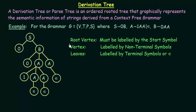Now let us see how this derivation tree is formed for this grammar. First we start with the start symbol S, which is the root vertex, and we see that S gives 0 and B. So these two vertices, 0 and B, become the children of the root vertex S. Since 0 is a terminal symbol, we can leave it as it is.